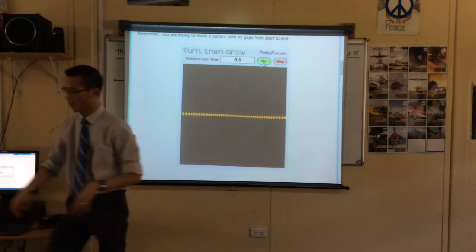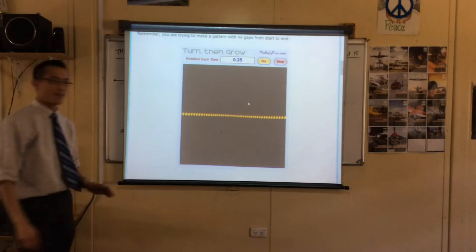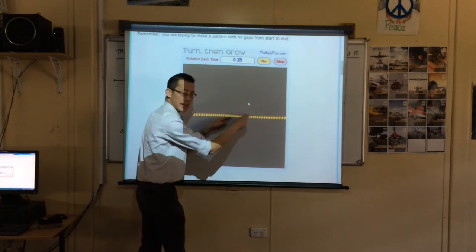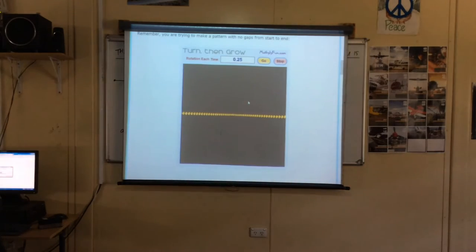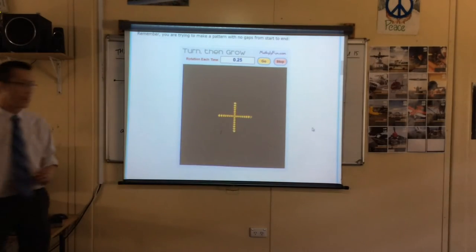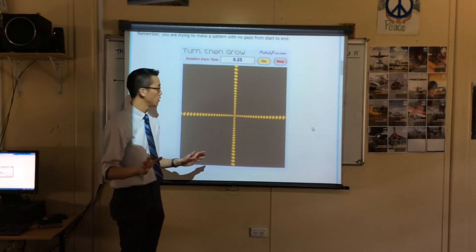You can kind of make out, look, you've got the really small cells here, and the big ones here, because they grow out further. Make sense? What if I did a quarter turn? 0.25. It's going to send a cell out, quarter turn, cell out, quarter turn, so you're going to get a cross, aren't you? This makes sense. Are you with me so far?